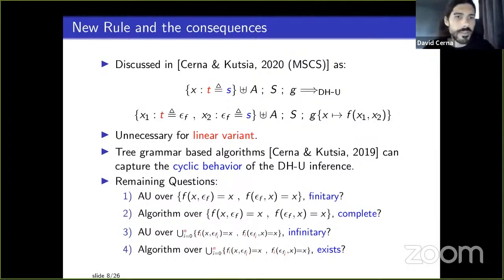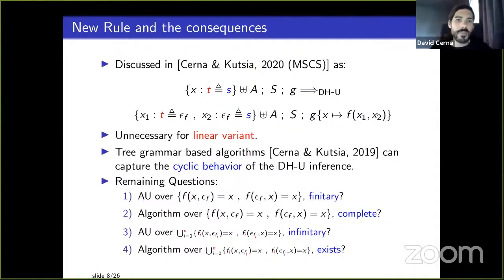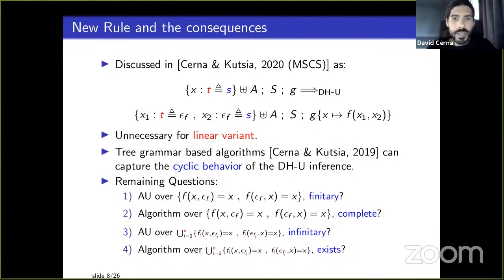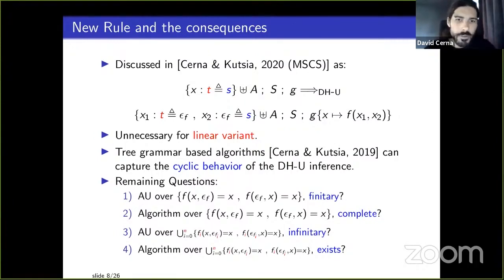This infinitary cycling behavior is similar to what happened in our 2019 paper on idempotent anti-unification, which motivated using tree grammar-based algorithms. Remaining questions: Is non-linear anti-unification infinitary? Can we get a complete algorithm? What happens with multiple unit functions and symbols, and does an algorithm exist in that case?